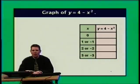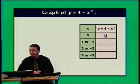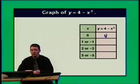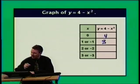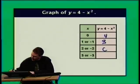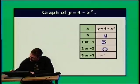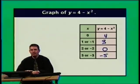Let's talk about up-down issues. Let's graph y equals 4 minus x squared. Completing a table: when x is 0, y is 4. When x is plus or minus 1, y is 4 minus 1 equals 3, giving points (1, 3) and (negative 1, 3). When x is plus or minus 2, y is 4 minus 4 equals 0, giving points (2, 0) and (negative 2, 0). When x is plus or minus 3, y is 4 minus 9 equals negative 5, giving points (3, negative 5) and (negative 3, negative 5).